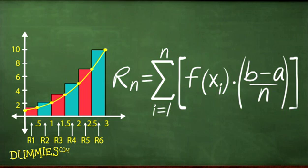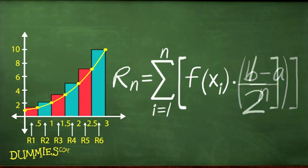a equals the starting point, 0. b equals the ending point, 3. And n equals the number of rectangles, 6. Now you have this equation.